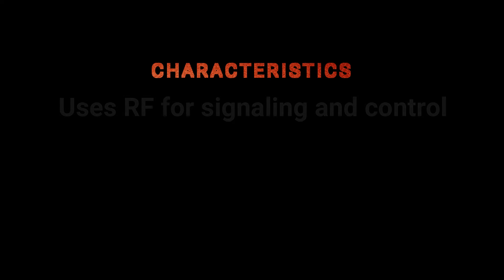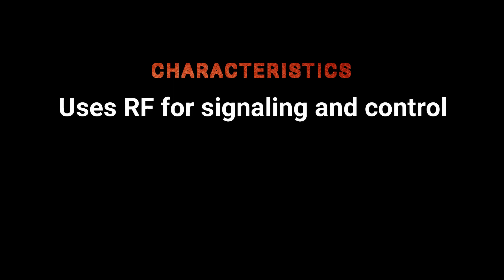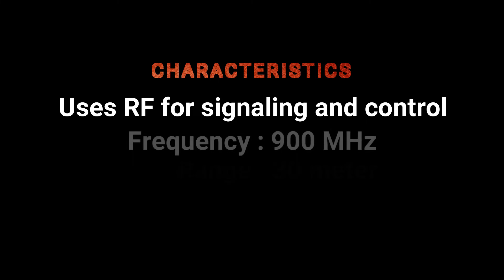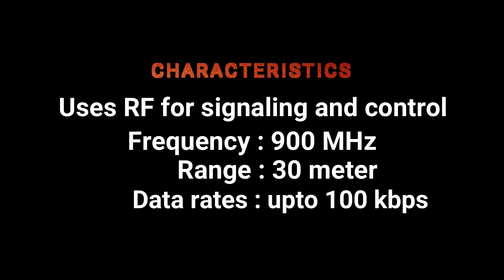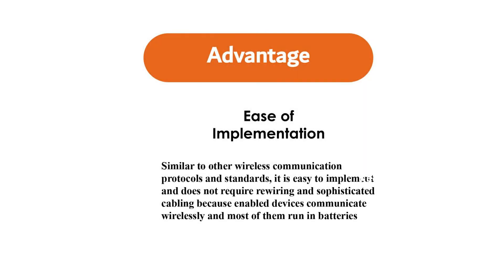Some characteristics of Z-Wave protocol. It uses radio frequency for signaling and controlling — frequency is 900 megahertz range, 30 meter range, and data rates up to 100 kbps. Ease of implementation: similar to other wireless communication protocols and standards, it is easy to implement and does not require rewiring and sophisticated cabling because enabled devices communicate wirelessly and most of them run on batteries.